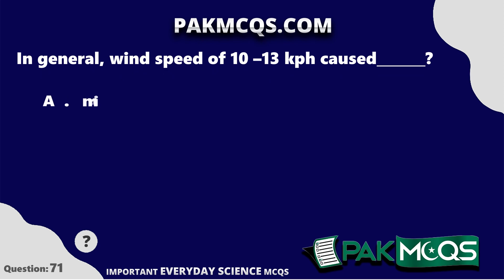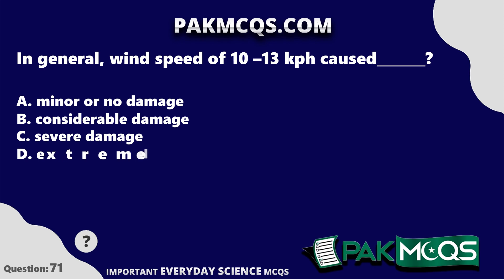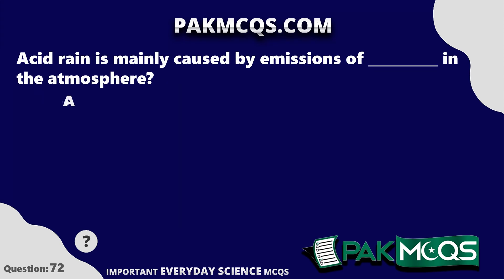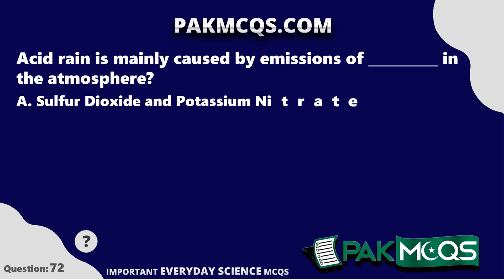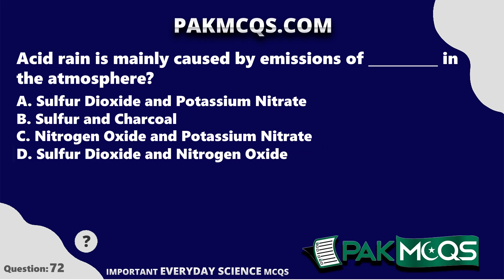In general, wind speed of 10 to 13 kilometers per hour causes minor or no damage. Acid rain is mainly caused by emissions of sulfur dioxide and nitrogen oxide in the atmosphere.